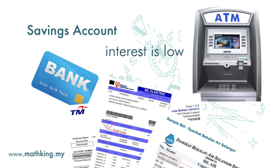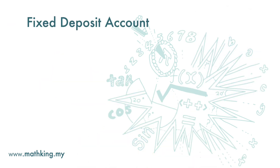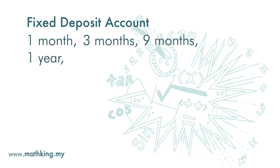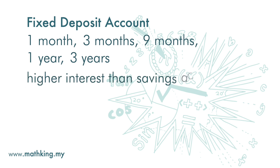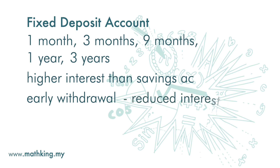Or you can put your money in a fixed deposit account, where you commit the money for a fixed period of time — for example, one month, three months, nine months, one year, three years, and so on. A fixed deposit account offers higher interest than a savings account. But if you withdraw your money before the maturity date — that is, earlier than the period you agreed on — you will get a reduced interest rate.